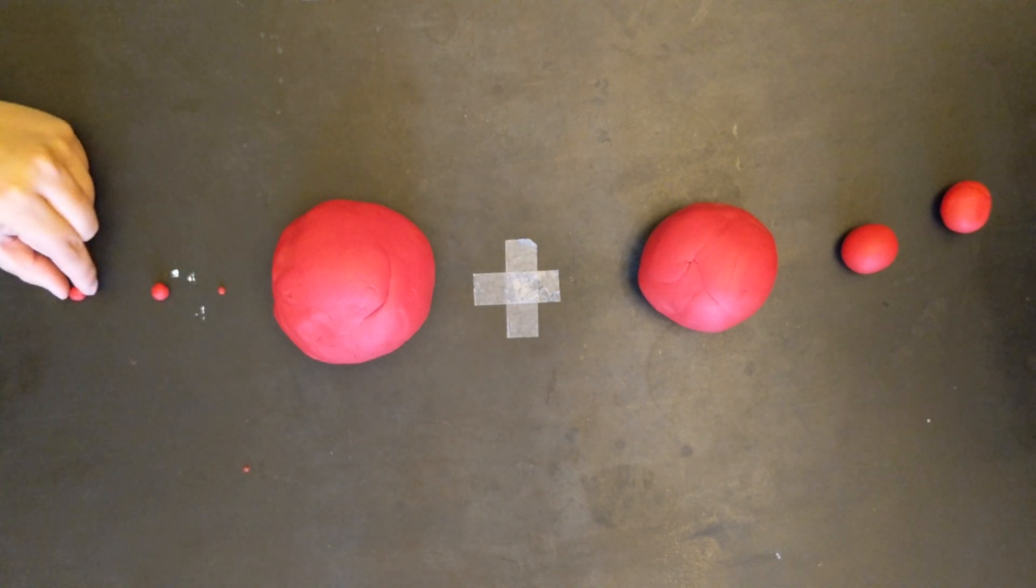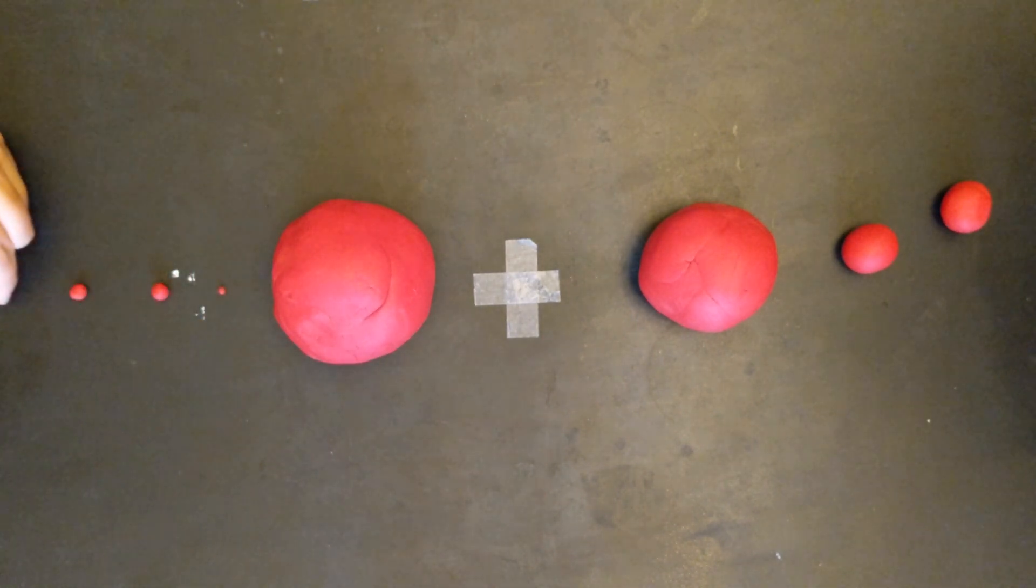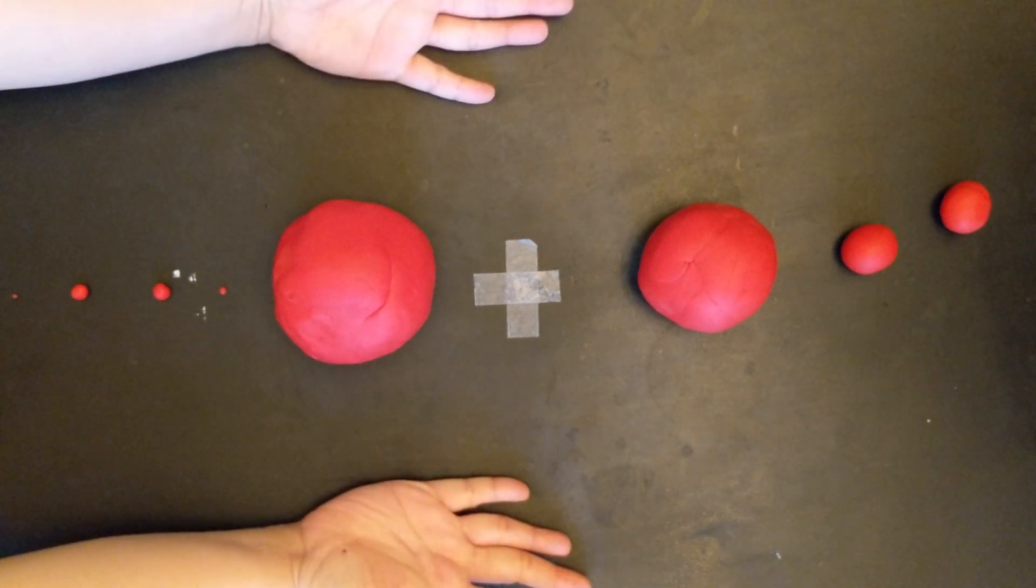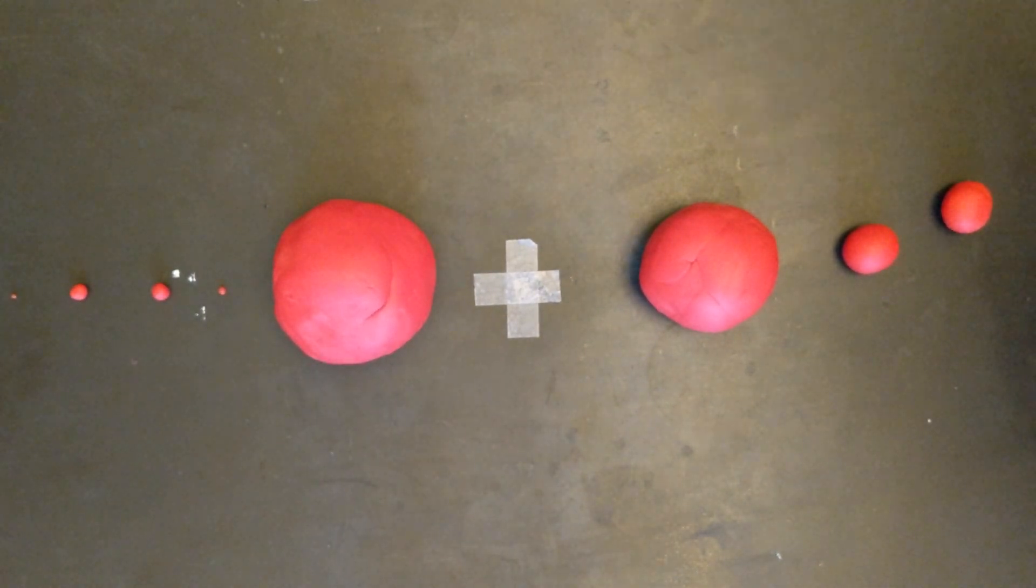Now, if we were to do the Sun as well, we would have to gather all these planets back up and get 400 more containers of Play-Doh in order to do the Sun.